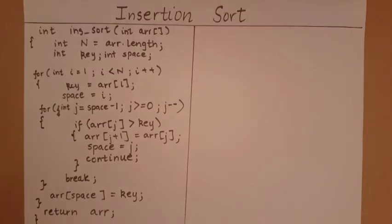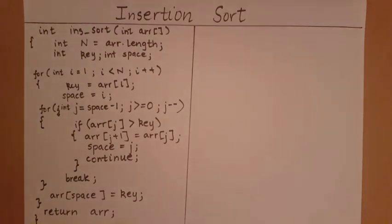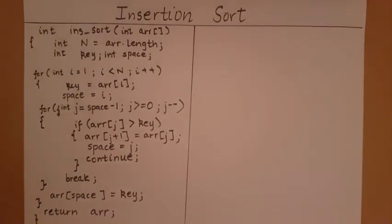In this video, we will take a look at how to calculate the worst-case time complexity of the insertion sort program we have written earlier, and thereby determine the Big O of this program. So let's start counting the primitive operations.